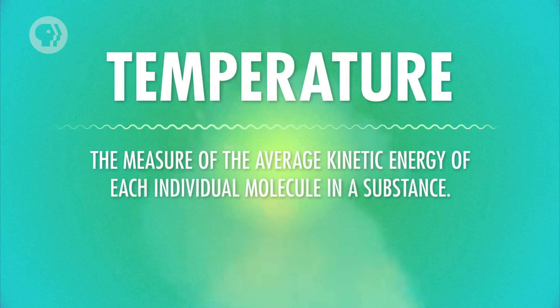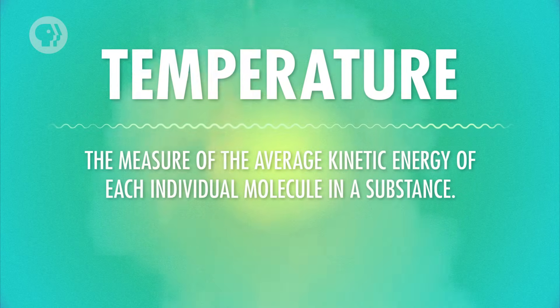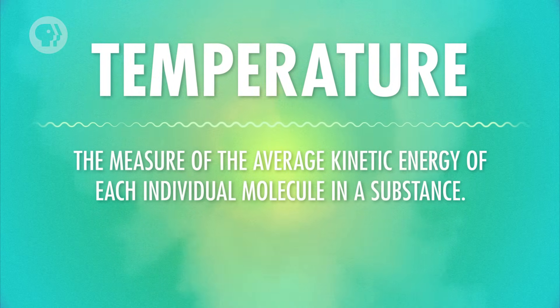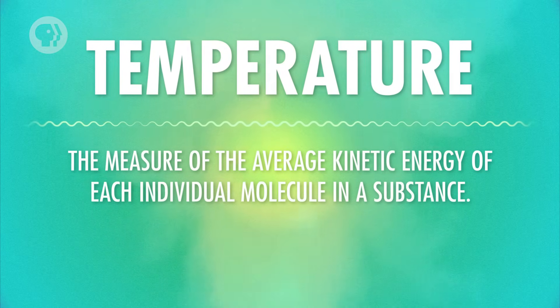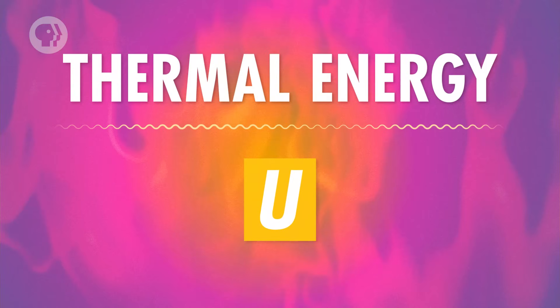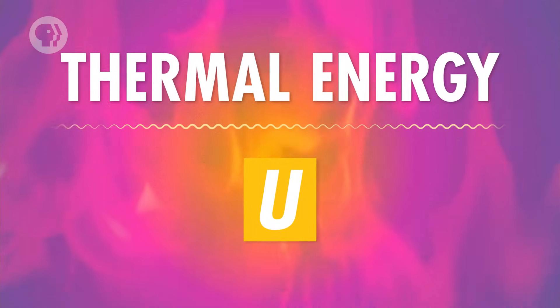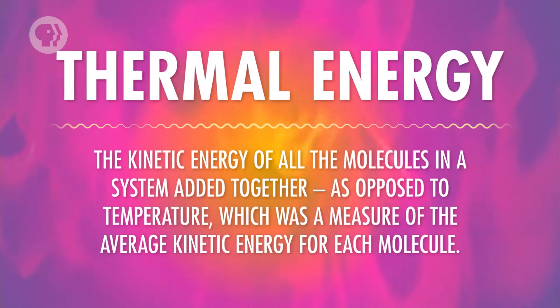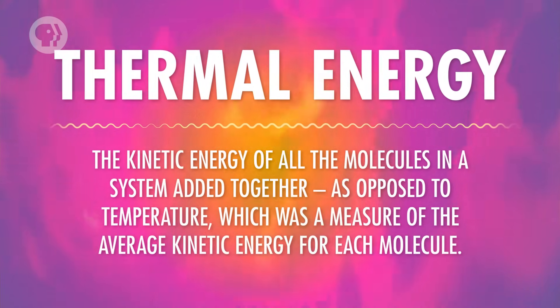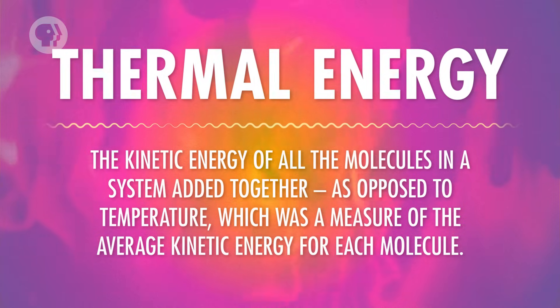In thermodynamics, there are a few different ways to describe the kinetic energy of a system. We've already talked about one of them – temperature, the measure of the average kinetic energy of each individual molecule in a substance. Another measure of the kinetic energy of a system is internal energy, also known as thermal energy, represented by the letter U. Thermal energy is the kinetic energy of all the molecules in a system added together,